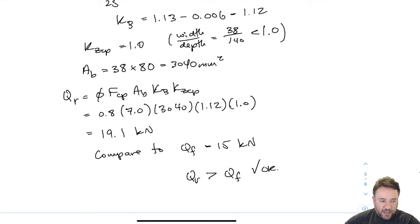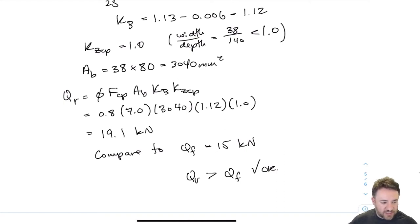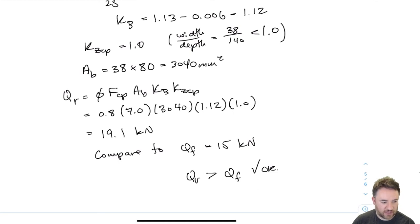At this point I have checked every single bearing resistance in that assembly — all the resistances of the glulam beam and the resistances of the joists sitting on top. Hopefully this gives enough varied examples to see all the different things we might encounter when calculating bearing resistances.